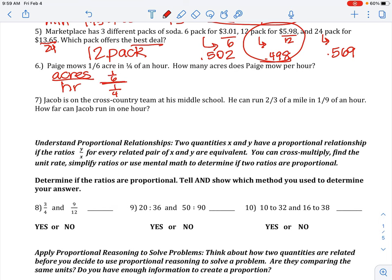To find the unit rate, we're dividing numerator by denominator. To do that, you need to keep change flip, and you will get 1 sixth times 4 over 1, which equals 4 sixths or 0.6 repeating acres per hour.